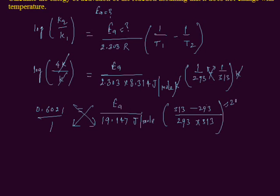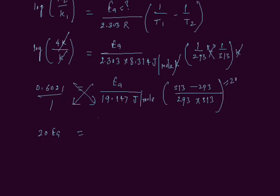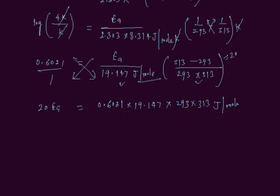In the numerator, we have 20 Ea. You can multiply these numbers. We get 0.6021 multiplied by 19.147 multiplied by 293 multiplied by 313. And the unit is joules per mole.